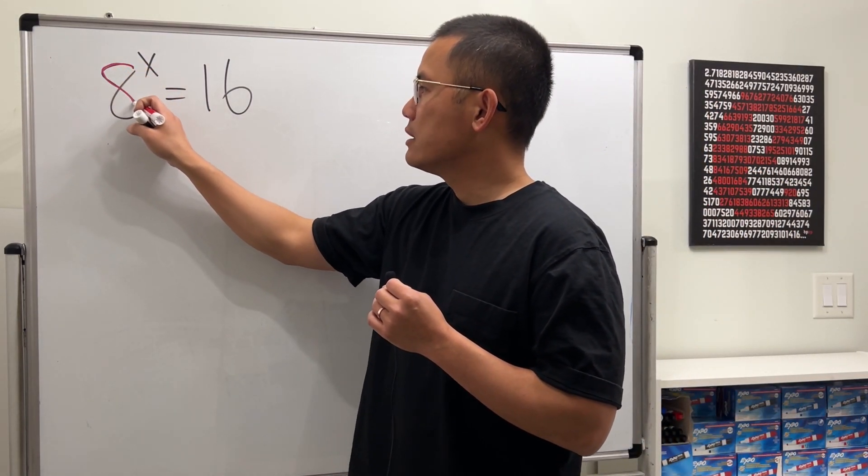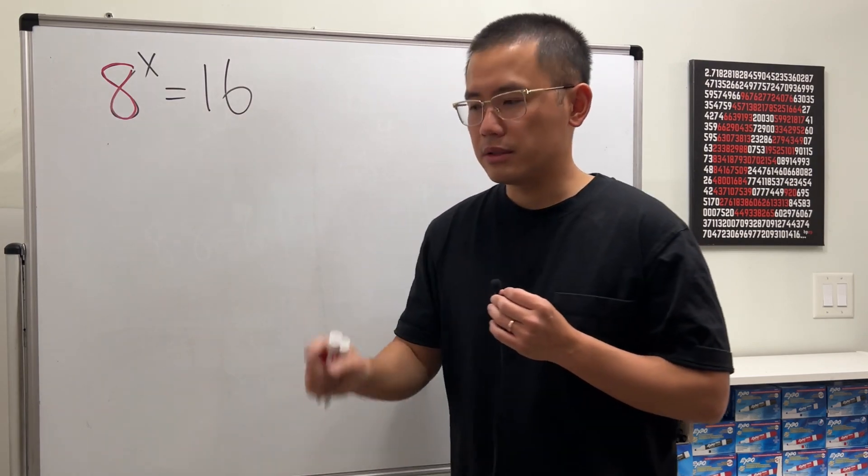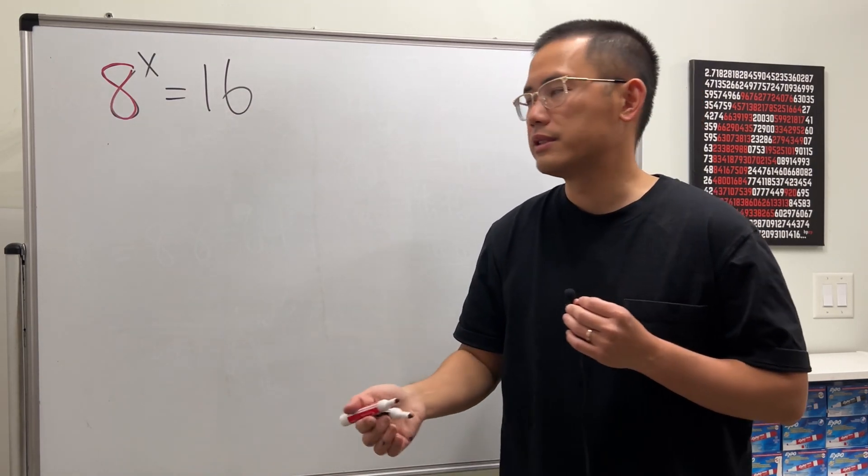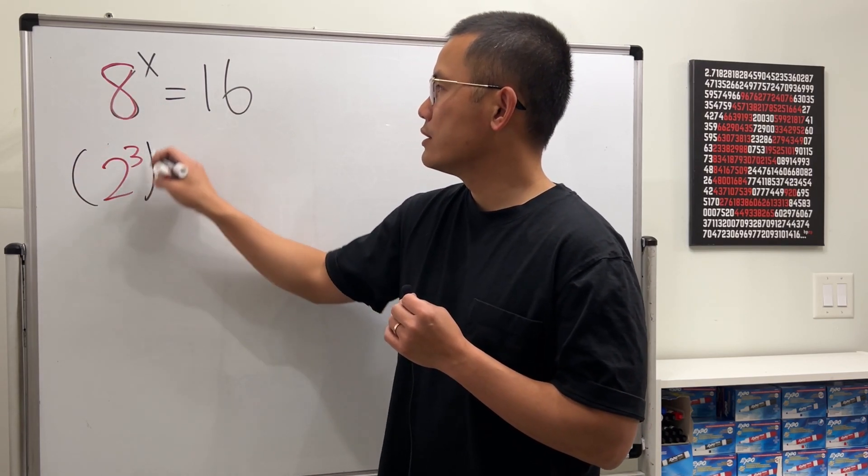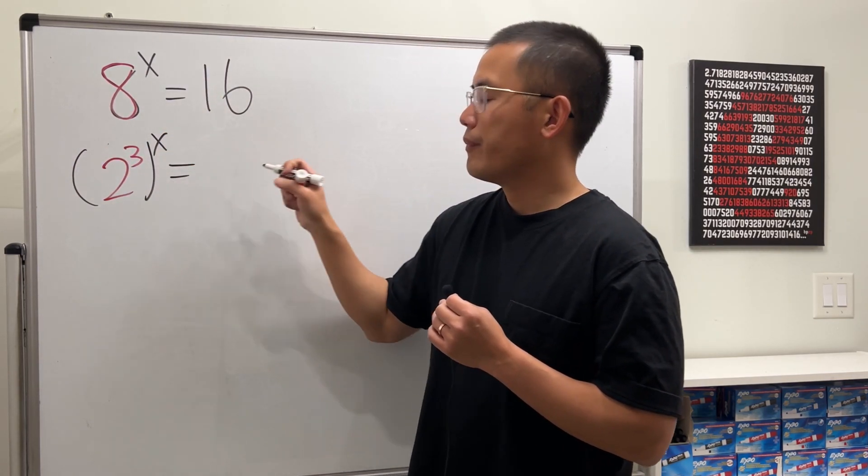Here, notice that we have 8, which is the same as 2 times 2 times 2, which is just the same as 2 to the third power. So we have this, and then raised to the x power.